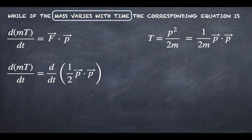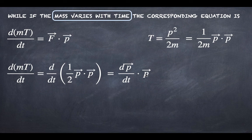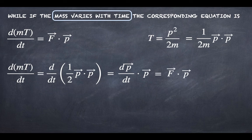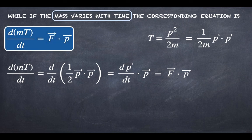The time derivative of (1/2)(p·p) equals (dp/dt)·p, since the derivative of p·p gives a factor of 2 which cancels with the 1/2. This term (dp/dt) is exactly the force, so we have F·p. We have just verified that we can write this equation as the time derivative of mass times the kinetic energy.